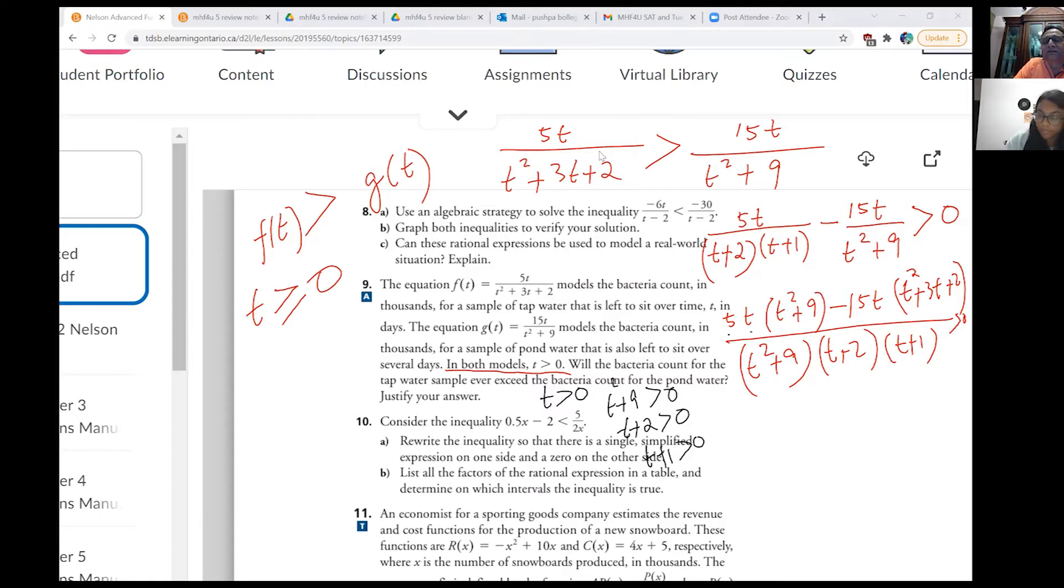And we can also multiply by... See, t is... All these terms are... If t is greater than 0, let's try to understand. In that case, t square plus 9 is greater than 0. Correct? Yes. t plus 2 is greater than 0. And t plus 1 is also greater than 0. Is that clear to you? So we can multiply. They are all positive numbers. So we can multiply with all these numbers and cancel. Do you see that?